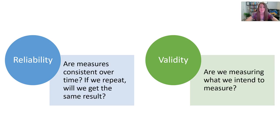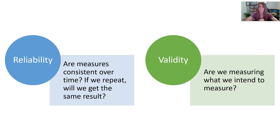Reliability is basically asking if the measures in our data set are consistent over time. If we repeat the experiment again, are we going to get the same or very similar results? Are there random errors or variations in the data, or does it make sense consistently over time? Validity is more about accuracy in the measurements — are we measuring what we're intending to measure?